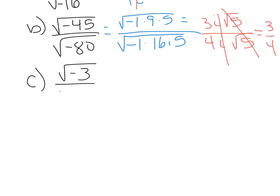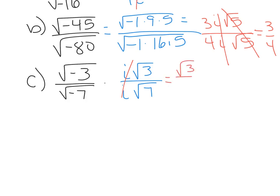Letter C says the square root of negative 3 over the square root of negative 7. This simplifies to i times the square root of 3 in the numerator — the 3 doesn't simplify but the negative 1 gives you an i. Same for the denominator: the 7 doesn't simplify but the negative 1 gives an i. The i's then cancel. The square root of 3 over the square root of 7 is not rationalized, so we multiply by the square root of 7 over itself, giving the square root of 21 over 7.